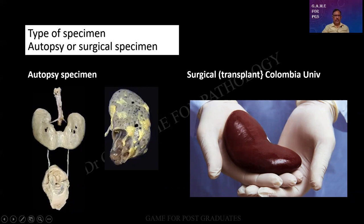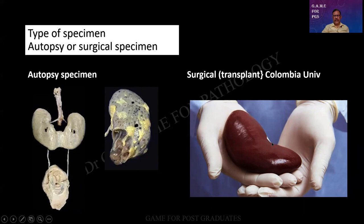And in this case, it is a horseshoe kidney. Therefore, the question can be, what are all the congenital anomalies that can be present? So this is one set of specimens. Another one, it can be a surgical specimen. So a transplantation is underway and look at the care with which the specimen is being handled. And when it does come to us, it can be a case of a graft rejection — acute rejection or so on.